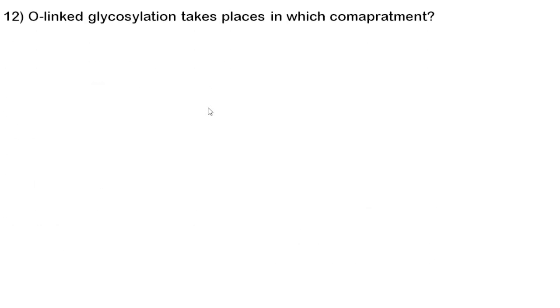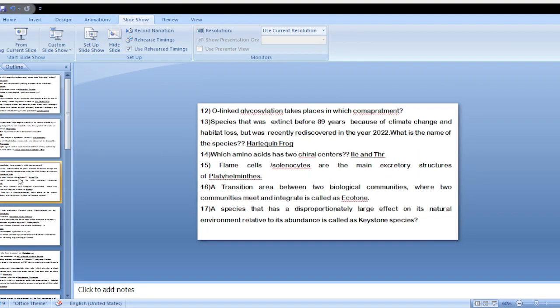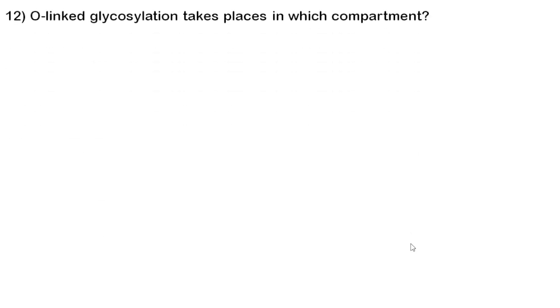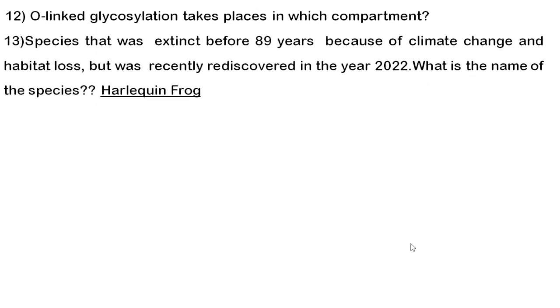Twelfth question: O-linked glycosylation takes place in which cellular organelle? There are two types of glycosylation: O-linked and N-linked. N-linked glycosylation takes place in the endoplasmic reticulum, whereas O-linked glycosylation takes place in the Golgi apparatus. O-linked takes place after N-linked.